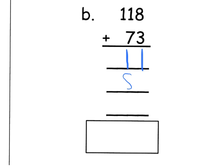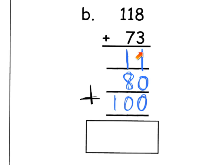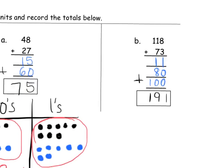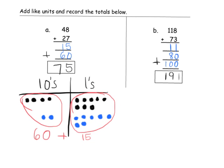So I'm going to record eighty right here. We have eleven, and now we have eighty. And then I have a hundred plus nothing down here — so that gives us a hundred. Now we can add all these together: one plus zero plus zero gives us one in the ones column; one plus eight plus zero is nine in the tens column; nothing plus one hundred gives us one in the hundreds column. So our answer is a hundred and ninety-one.